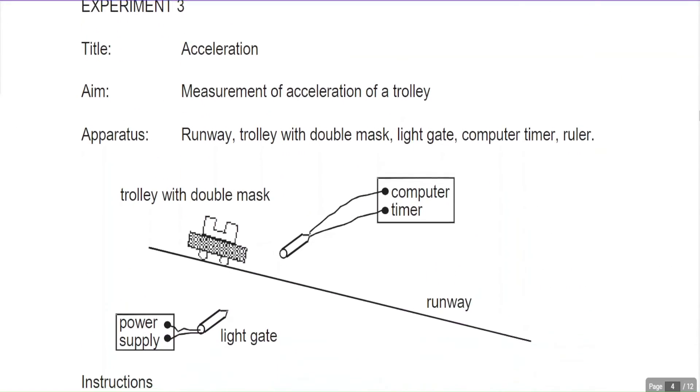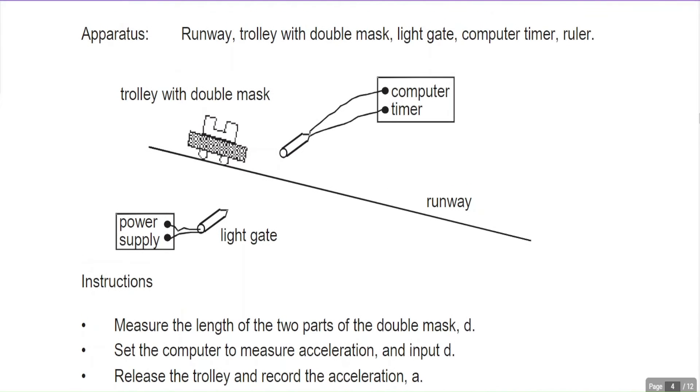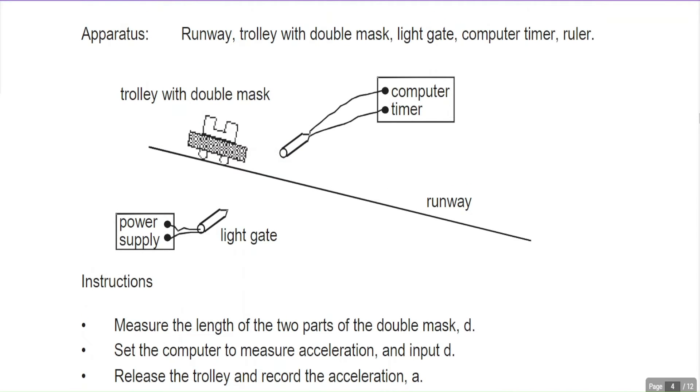For finding the acceleration, you need a double interrupt card. The double interrupt card has a depression here. It measures the speed here as v1, then measures the speed there as v2. If it's accelerating, you find the difference between v2 and v1 and divide by the time taken between the two. So acceleration equals v2 minus v1 over time.